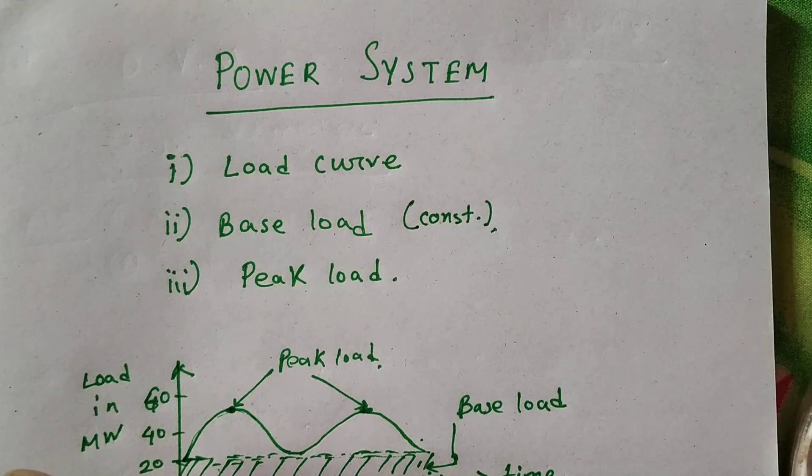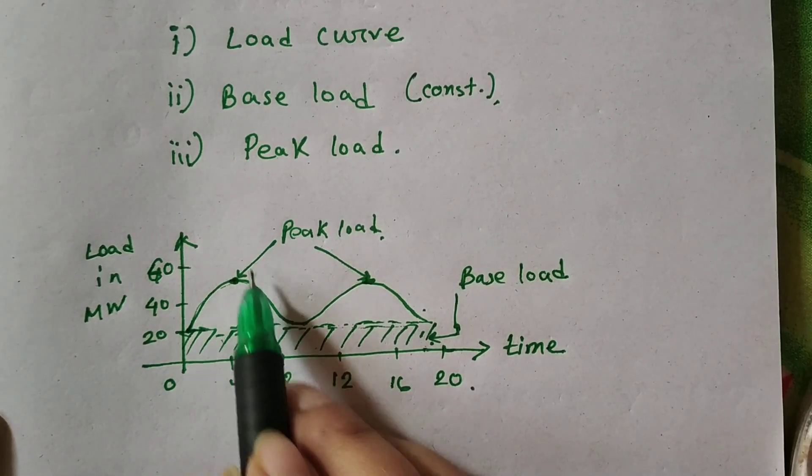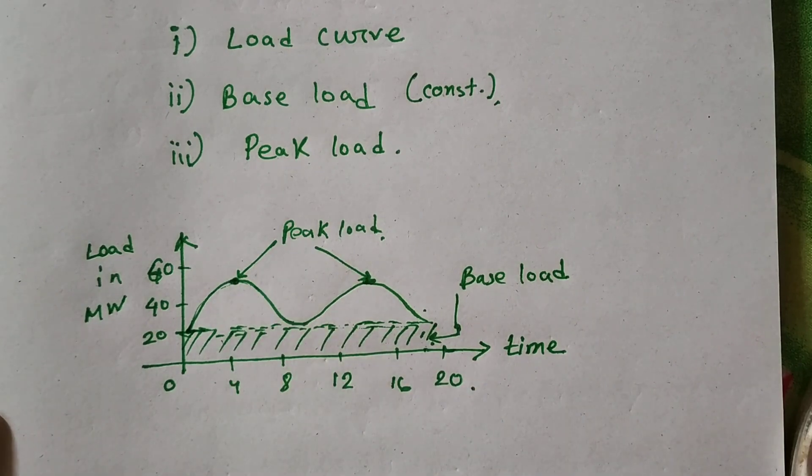So the definition is various peak demand of the load over and above the base load of station. Means, above the base load, the variation of load is called peak load.